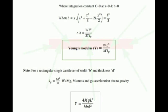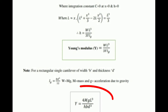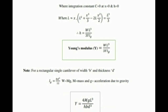This is the equation derived for the cantilever expression. However, since we are working on a rectangular beam, we substitute Ig = bd³/12 into the above equation. This gives the final equation: Y = 4MgL³ / (h·b·d³). This is the final expression for a rectangular cantilever beam, and this derivation may come for eight marks.